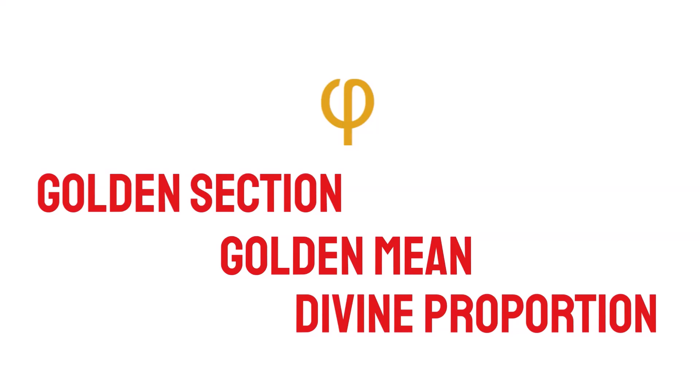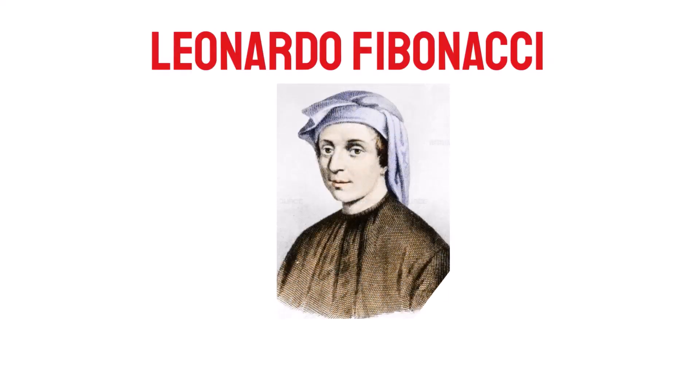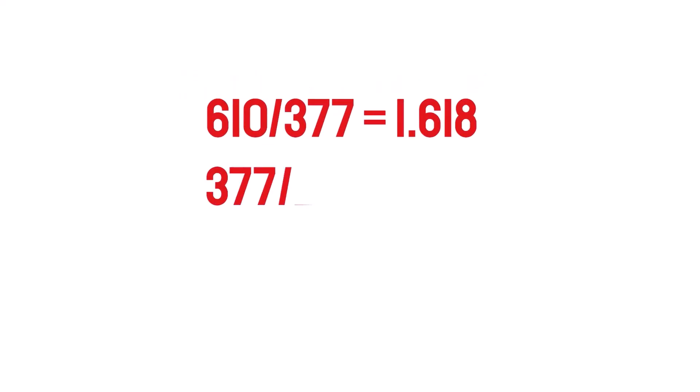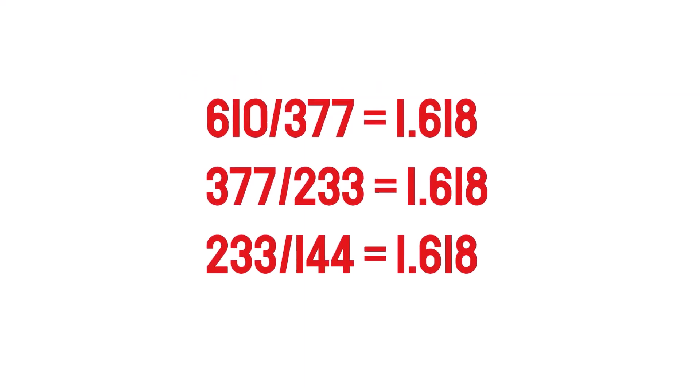The golden ratio is also known as the golden section, golden mean, or divine proportion. Mathematicians, scientists, and naturalists have known about it for centuries. It's derived from the Fibonacci sequence, named after its Italian founder Leonardo Fibonacci. The Fibonacci series is a sequence of numbers starting from zero, where each number is the sum of the previous two. As you proceed with the series and divide any number by the previous number, the ratio is always approximately 1.618.